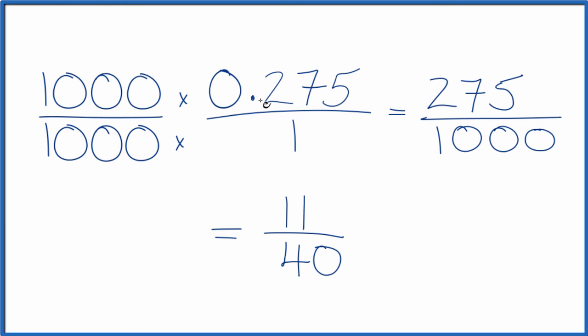So the decimal 0.275, it's equal to 11 divided by 40. Or you could say it's equal to 275 divided by 1,000. This is Dr. B converting the decimal 0.275 to a fraction. Thanks for watching.